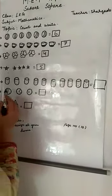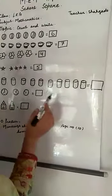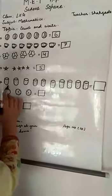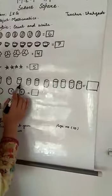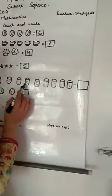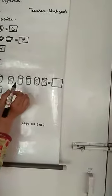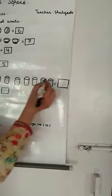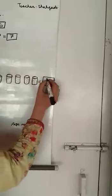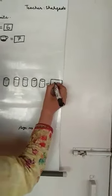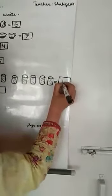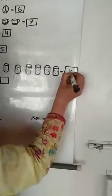यहाँ मैंने glasses बनाए हैं: one, two, three, four, five, six, seven, eight, nine, ten. Is equal to ten. यहाँ box में लिखना है — ten.